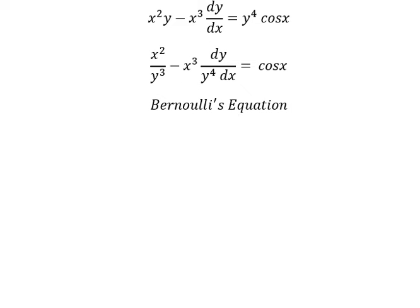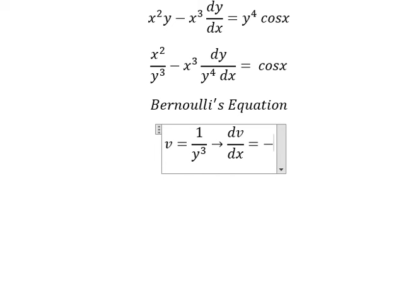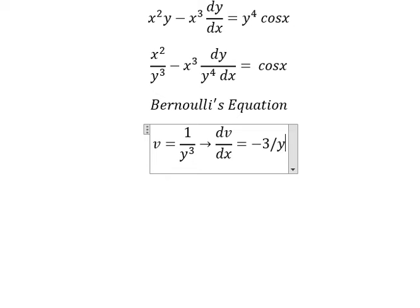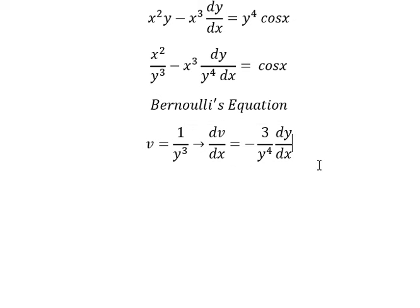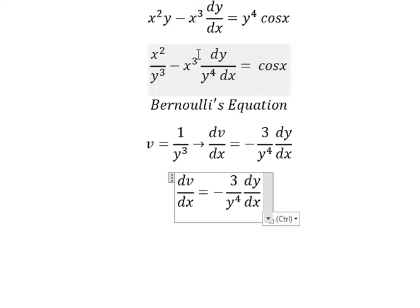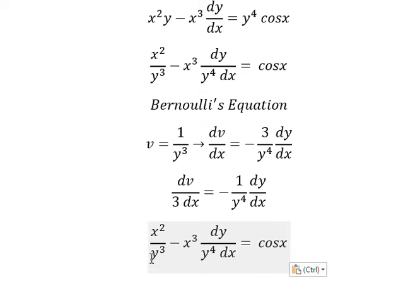So I will put v equals to 1 over y to the power of 3. So if we do first the differential for both sides, we will have negative 3 over y to the power of 4, dy over dx. Because we don't have the number 3 in here, so we divide both sides by 3. So 1 over y to the power of 3, we change for v.